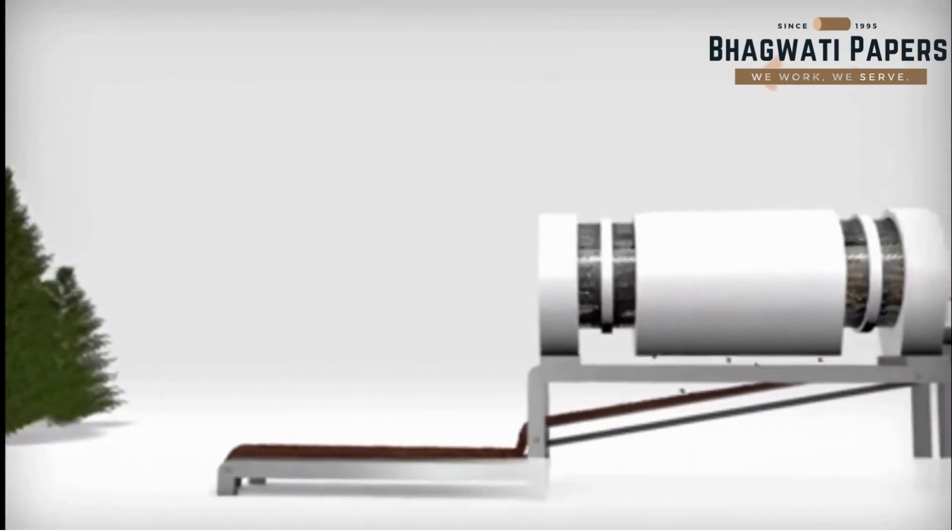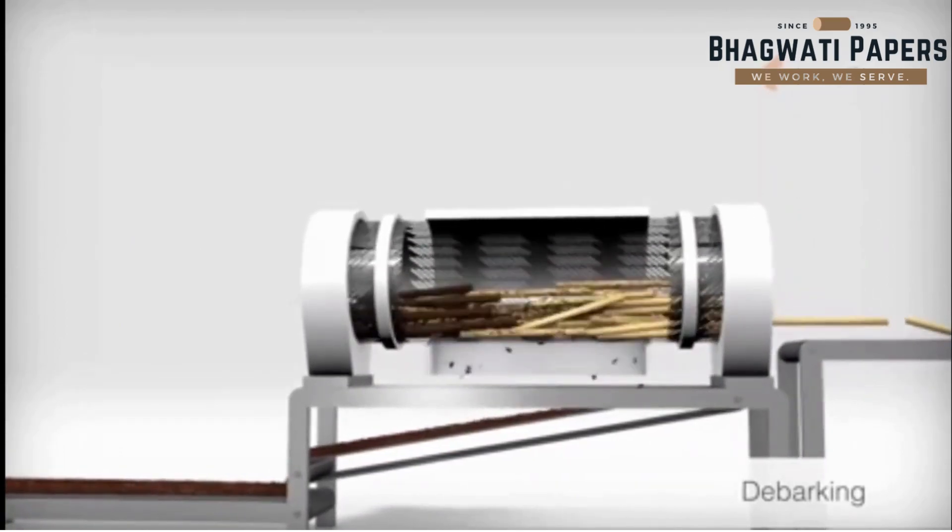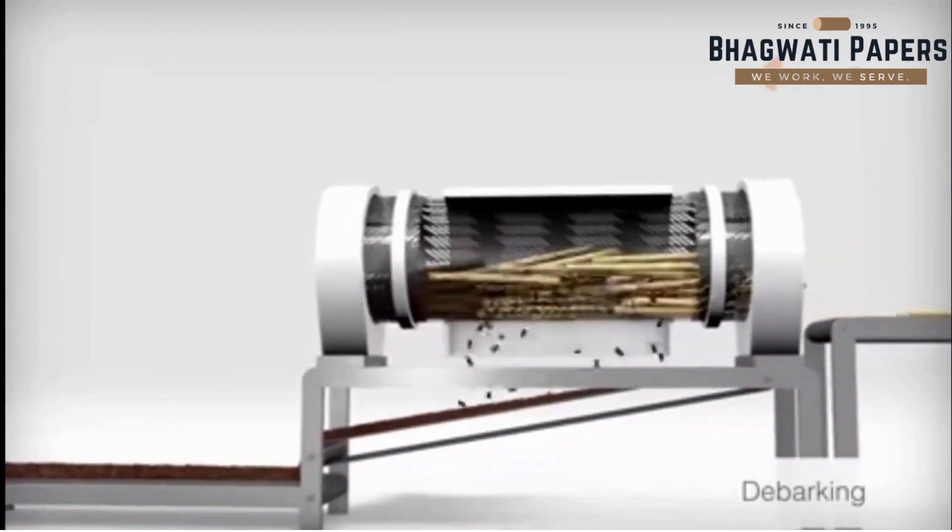First, the long wood is debarked in a rotating drum by friction, generated by beating the logs against each other and against the drum wall.